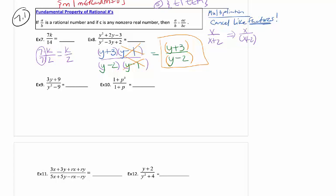For problem 9, don't forget GCF is really important as your first step. We can pull out a 3 from the numerator, leaving (y + 3). In the denominator, it factors to (y + 3)(y − 3) — difference of squares, which should be a quick, easy factor. The like factors cancel, and we're left with 3 in the numerator and (y − 3) in the denominator. If you want to cross out the 3's, put the parentheses there for yourself.